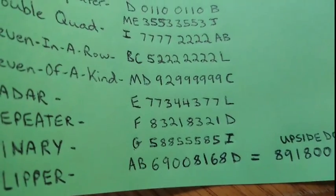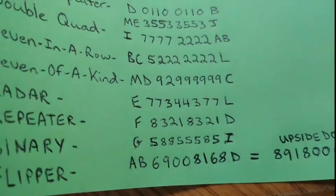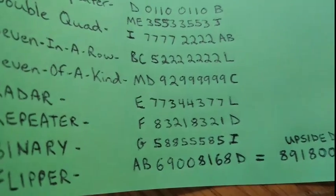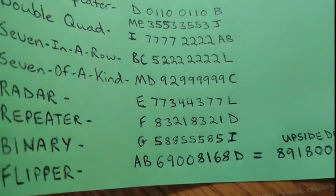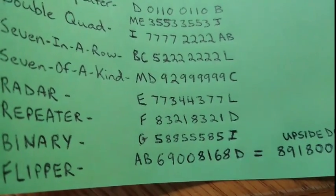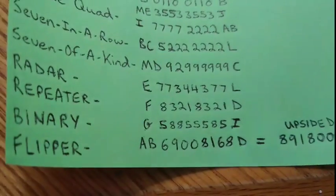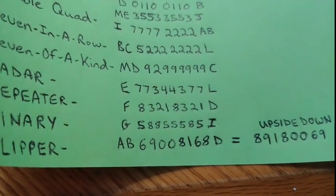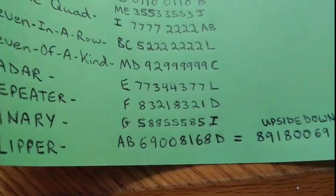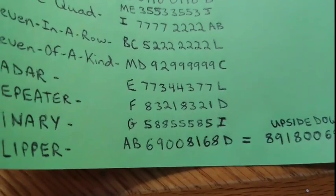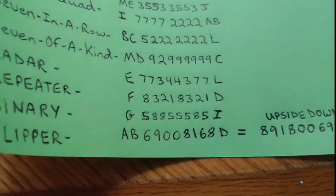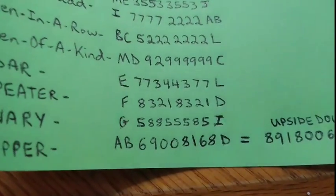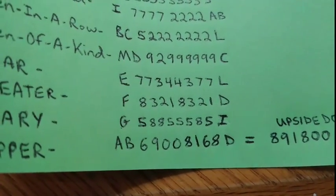Then we have the radar, which reads the same backwards as forwards — for example 7, 7, 3, 4, 4, 3, 7, 7. Then the repeater, like 8, 3, 2, 1, 8, 3, 2, 1. Then we have a binary, which is just two numbers and nothing more — for example only 5s and 8s, no matter how many of each.